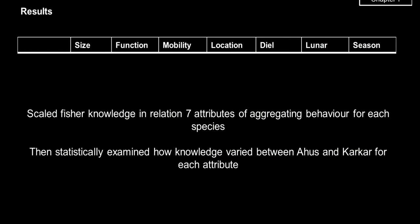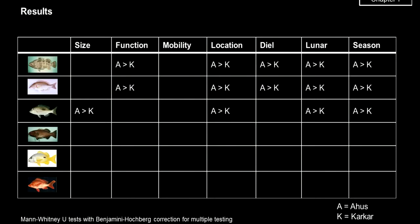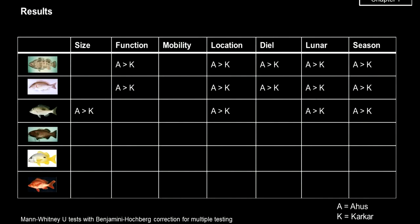I scaled fishing knowledge in relation to different attributes of aggregating behavior and statistically examined how knowledge varied between Ahus and Karkar for each attribute and each taxa. For the grouper and two emperors — the top three rows — fishermen at Ahus had far more precise knowledge on all attributes. For the bottom three species — a grouper and two snappers — knowledge was equally developed across Ahus and Karkar.